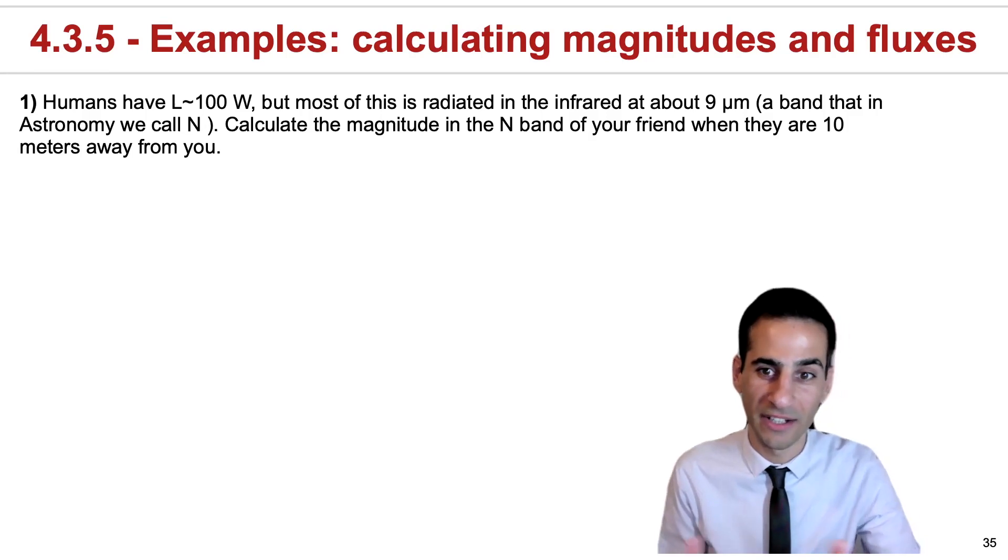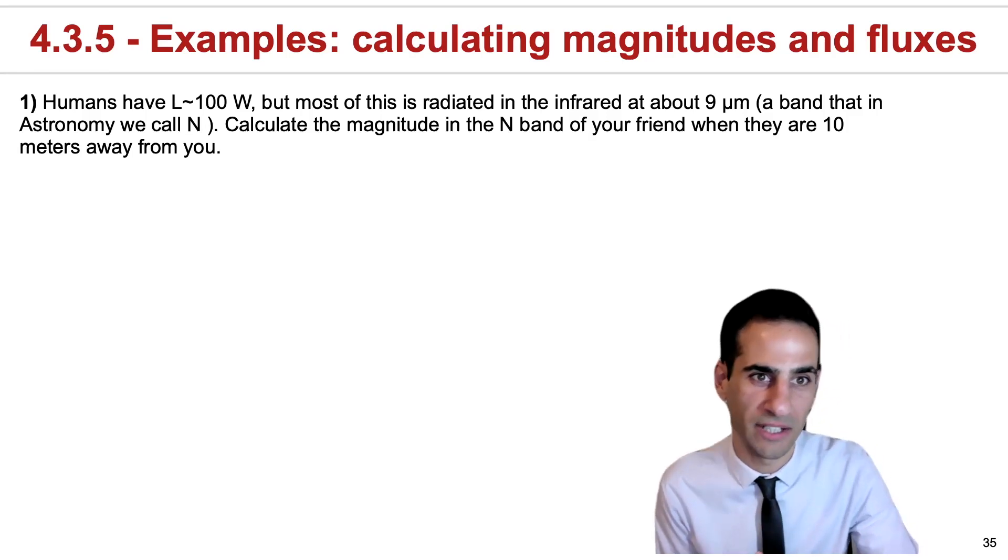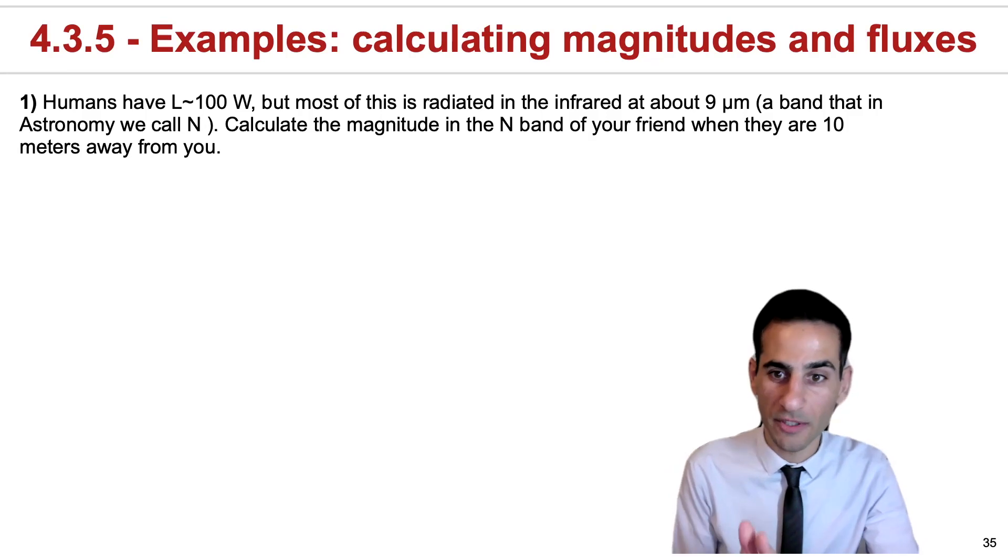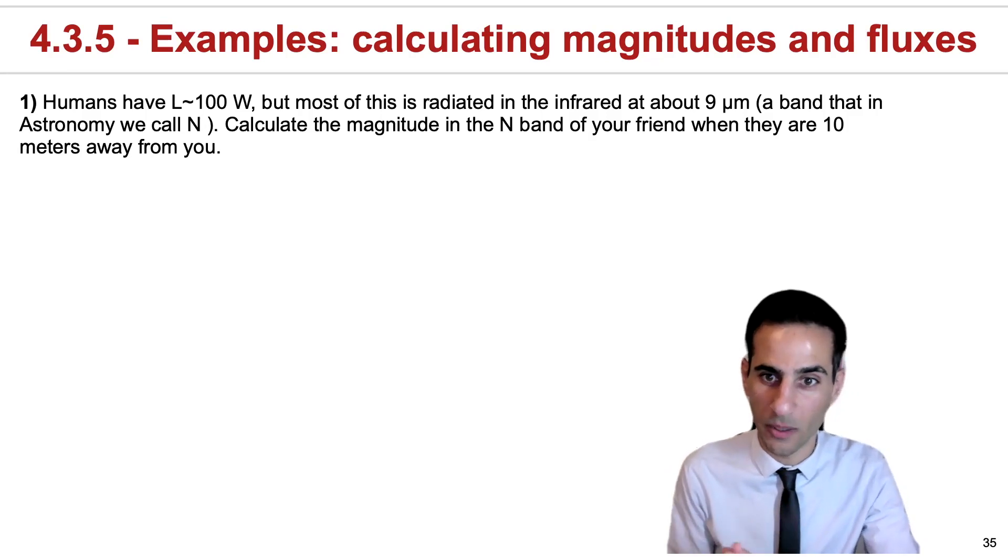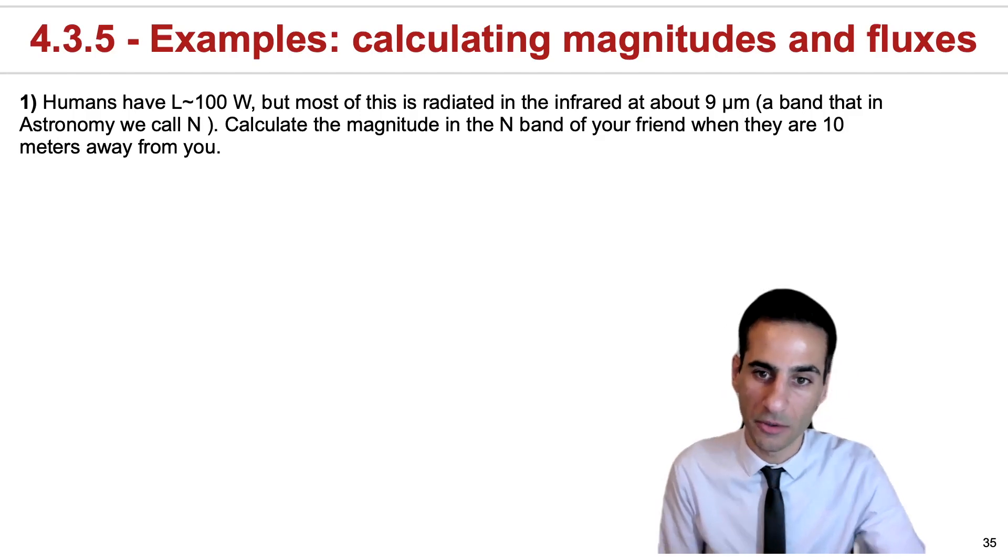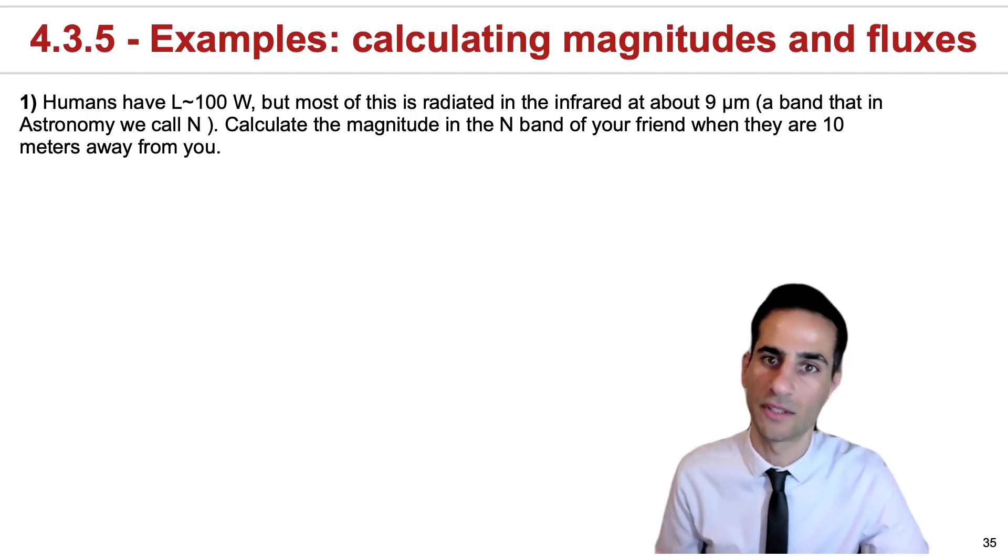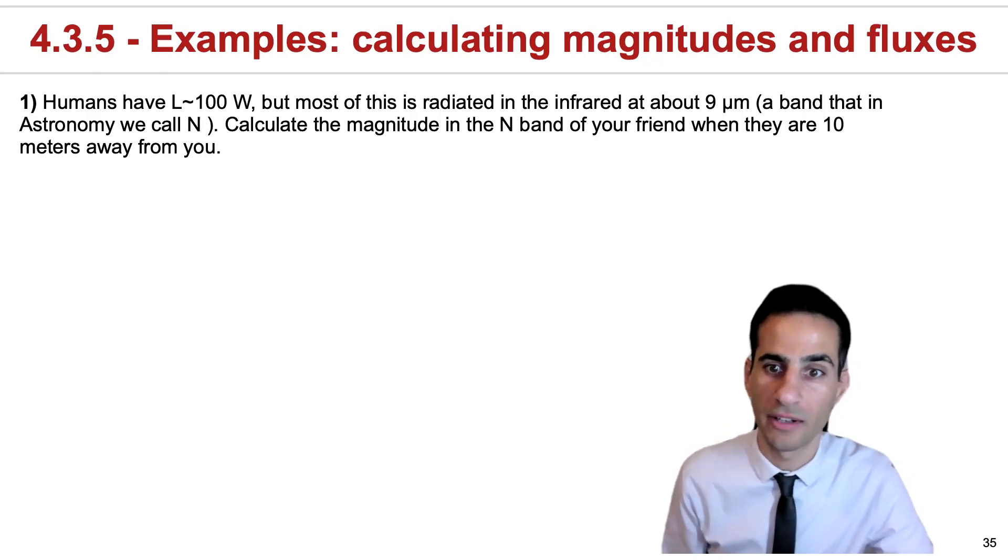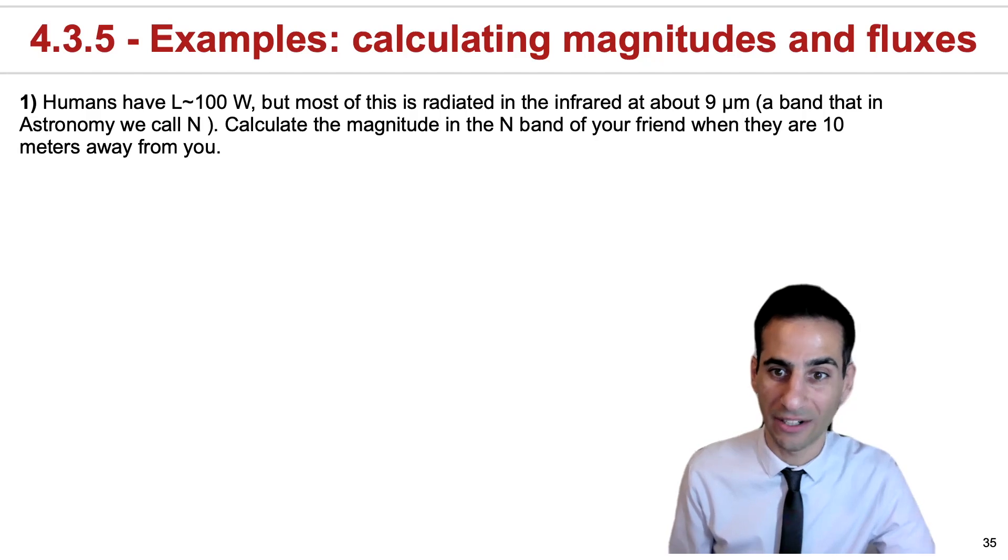But humans are energy sources. We produce something like 100 watts, but most of our energy is radiated well into the infrared at about 9 microns. So if we calculate our magnitude in the optical, it's going to be very, very high even if we're close. But our magnitude at 9 microns is not necessarily that large or we're not necessarily that faint.